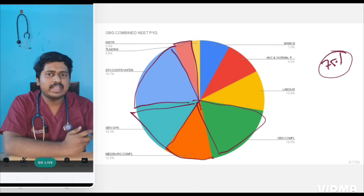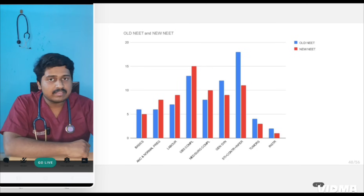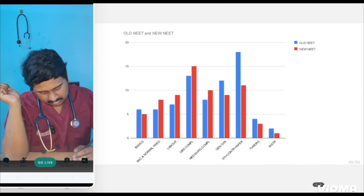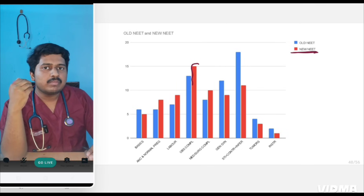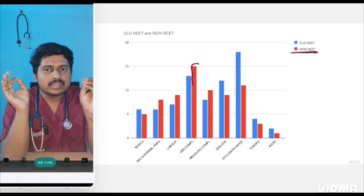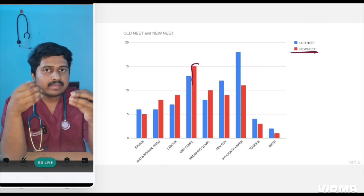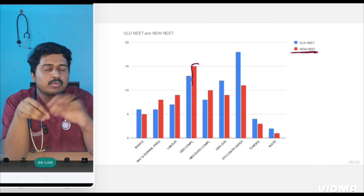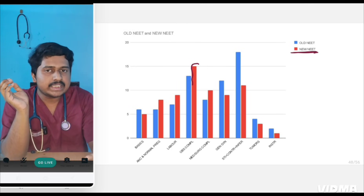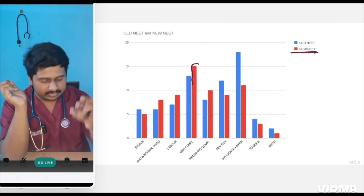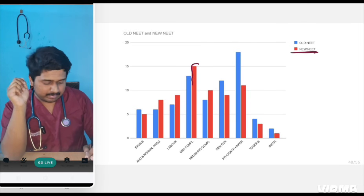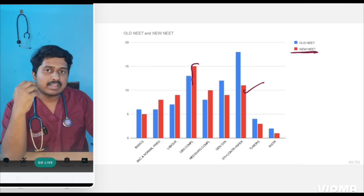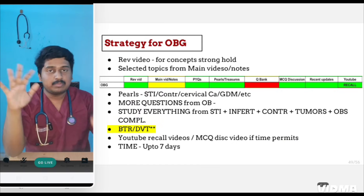In gynecology, 50% of questions are from just three topics — HTI, contraception, and infertility. In old vs. new NEET: number of OBG questions asked in the new pattern are more than gynecology questions. Overall, 87 OBG questions were asked in six years and 60 gynecology questions, but in the last three years, obstetric questions carry more significance — in contradiction with INICT where gynecology carried more weight.